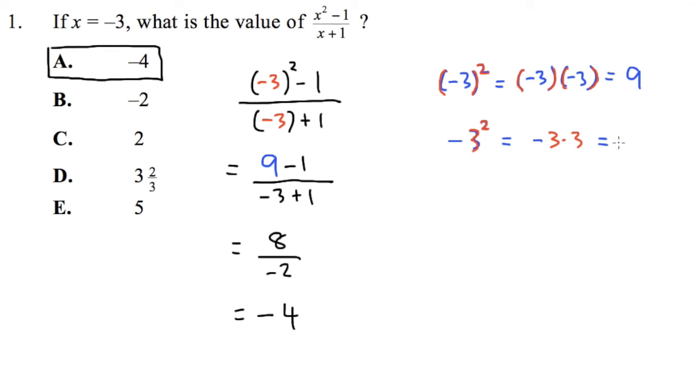And then, 3 times 3 in red gives us 9. So, if the question is negative 3 to the second power without parenthesis, the answer for this is negative 9.